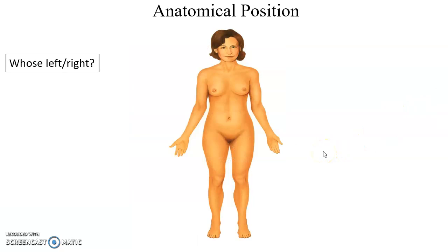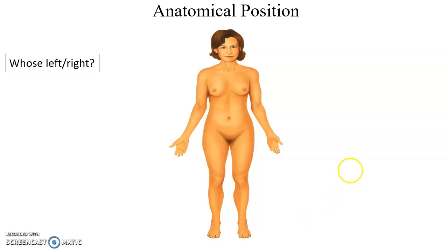The anatomical position is the standard position we assume a body is in when discussing where structures are relative to each other. The body is facing you, standing upright with feet together, arms at the sides, and palms facing forward anteriorly. Left and right refer to the patient's left and right — so this arm would be the right arm and this arm would be the left arm.